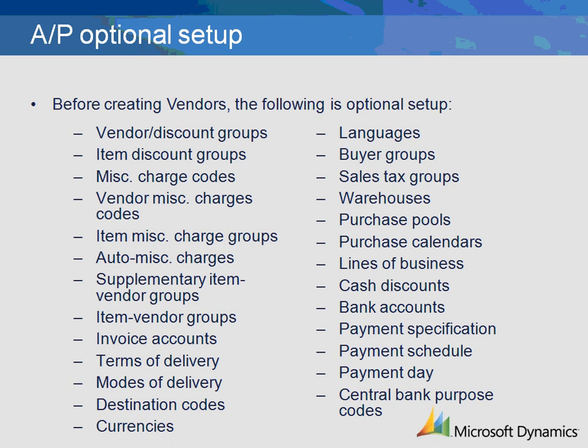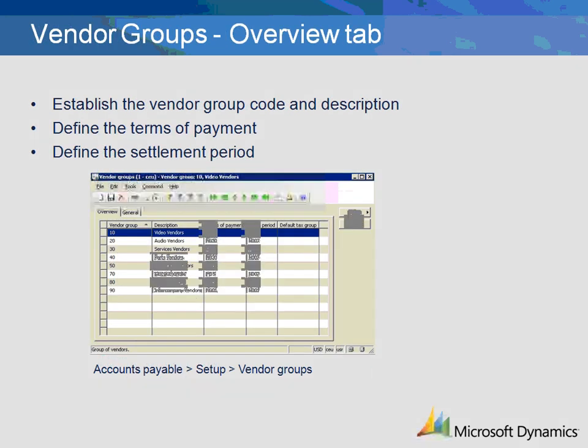Before we review the fields found within the vendor record, we will need to create vendor groups. On the Overview tab, first create a distinctive group code and a corresponding description. Then select the terms of payments that will be applied for this vendor group.